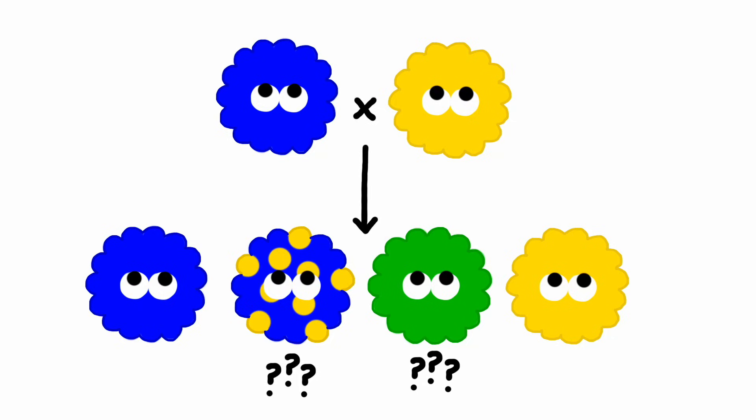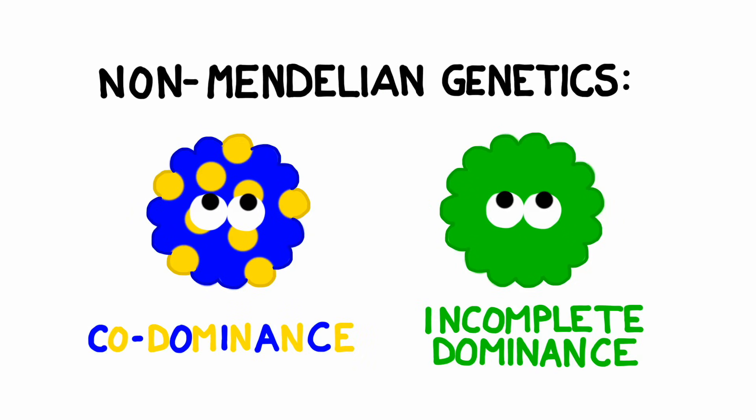Have you ever wondered why some offspring don't resemble either of their parents, but rather look like a mix of the two? This is often due to gene interactions called co-dominance or incomplete dominance. Today we'll review what they are, a couple of examples, and then finish out by writing some definitions for each type of dominance.